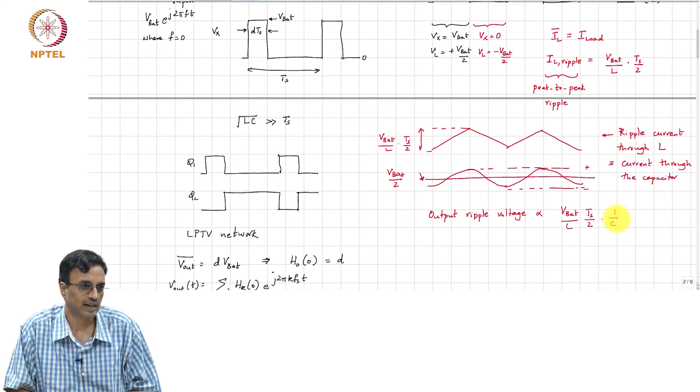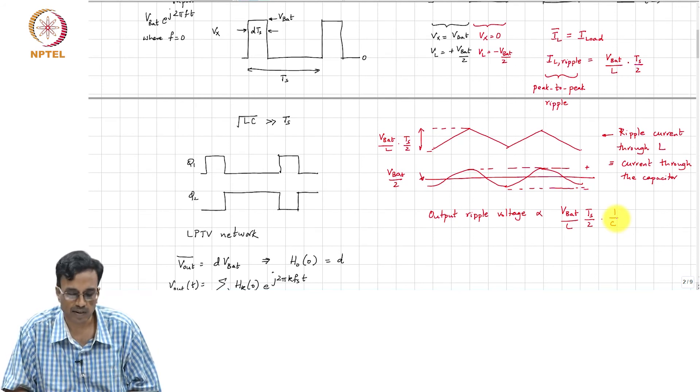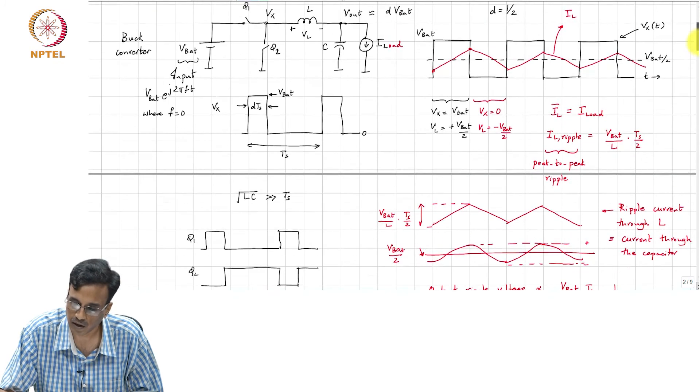And the amplitude of the ripple will be inversely proportional to, the output ripple voltage is obviously proportional to the amplitude of the triangular current through the capacitor. So it is V_bat by L times T_s by 2. And it is also inversely proportional to the capacitor. If the capacitor is very large, the voltage developed across it will be very small. So it is very clear that if you want the output voltage ripple to be small, L and C must be very large. Now this is saying that you need to have a better filter. So if you have a better LC low pass filter, then you have lesser amount of ripple at the output. There is nothing fantastic about this, it is pretty common sense. Very good.